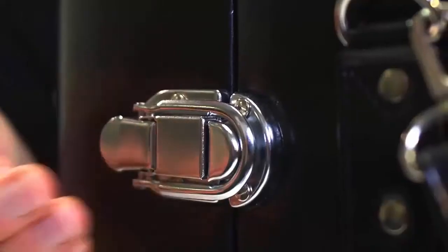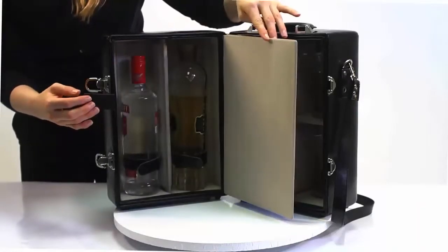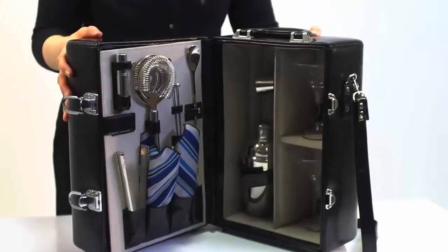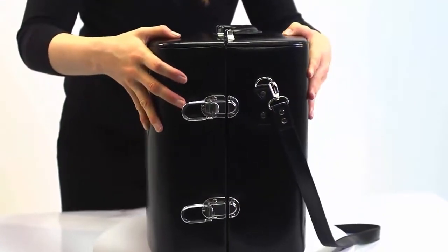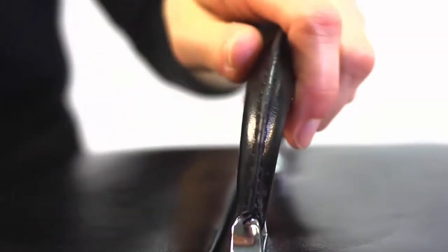It also includes napkins. The Manhattan features a divided insulated compartment to carry two bottles, a fully detachable adjustable shoulder strap, and a suitcase-style handle for easy carrying.